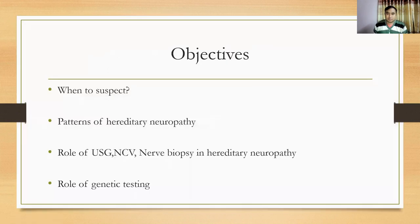What we are going to discuss today: the first objective is when we are supposed to suspect genetic neuropathies in someone presenting with features of neurological weakness, what are the patterns of hereditary neuropathies, and what is the role of ultrasound, nerve conduction velocity, nerve biopsy in evaluation of hereditary neuropathies, and what is the role of genetic testing.